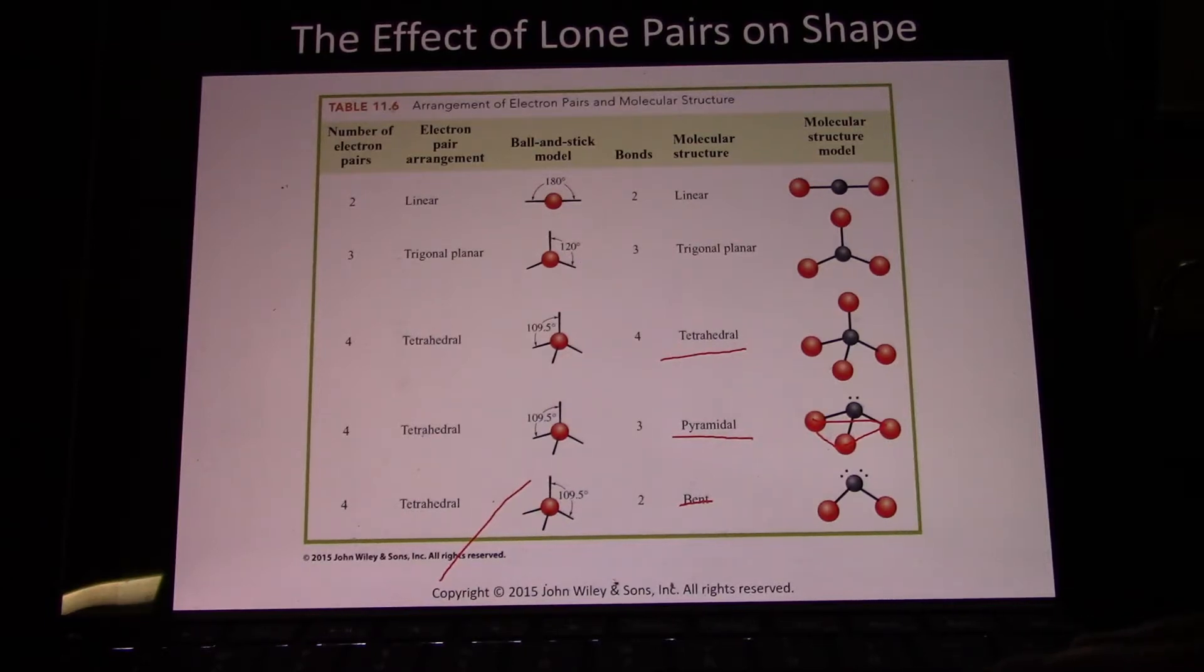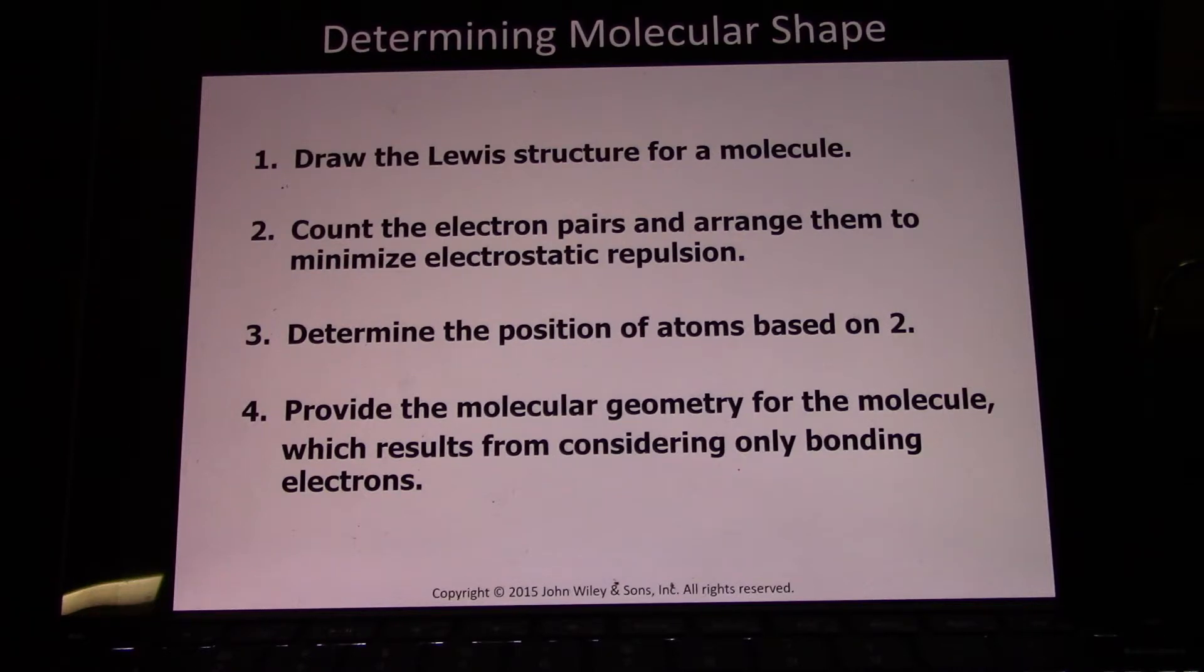Determining a molecular shape: Draw the Lewis dot structure for a molecule. Count the electron pairs and arrange them to minimize repulsion. Remember, an electron pair counts as one group—a single bond is one group, a double bond is still one group, a triple bond is still one group. Then we predict the structure.